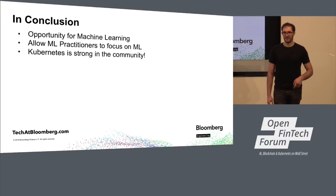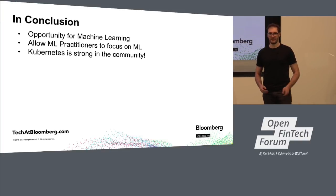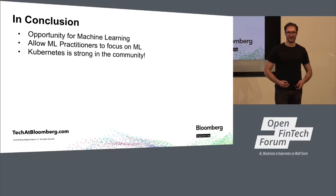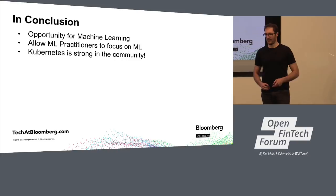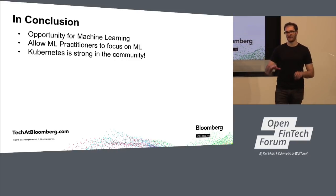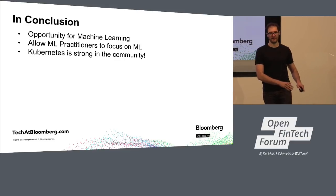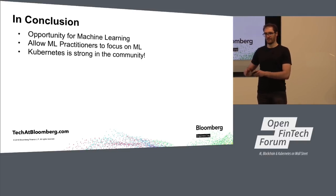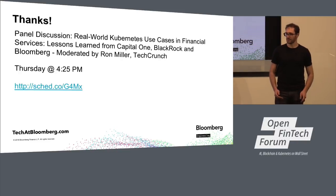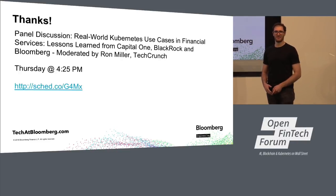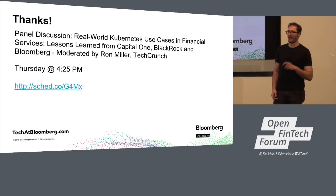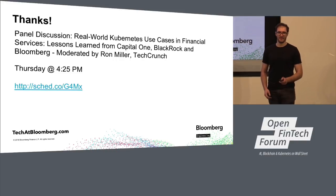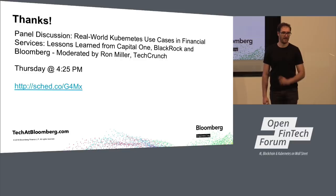To wrap up: at Bloomberg we have a huge amount of data and we've needed machine learning for it — a great opportunity. To leverage machine learning efficiently, we really need our ML practitioners to think about ML and not about infrastructure. We do this by introducing Kubernetes custom resources, which allow the infrastructure team to think about infrastructure. Thanks for keeping this community strong and being involved in open source. If you have more questions, our head of data and analytics at Bloomberg will be on a panel tomorrow afternoon at four o'clock.